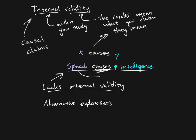In other words, instead of spinach causing intelligence, maybe intelligence causes spinach eating, or maybe some other variable is causing people to be both intelligent and eat spinach. The point is there are alternative explanations, and those alternative explanations are very feasible. They're just as likely as what we're claiming, which means our claim is not substantiated by the evidence.